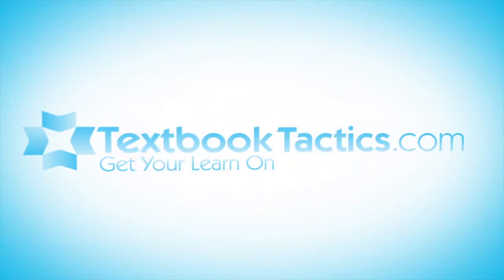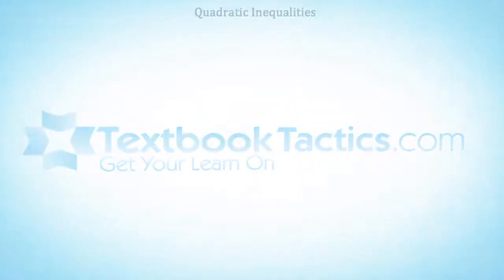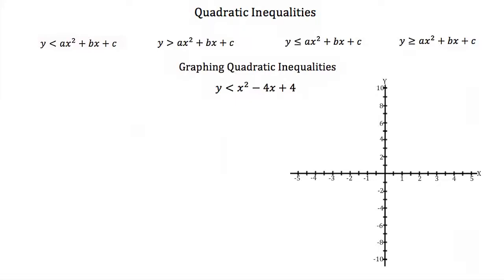This is a tutorial on quadratic inequalities. A quadratic inequality is just like a quadratic equation, except we have an inequality sign — a less than sign, a greater than sign, less than or equal to, or greater than or equal to. These are all quadratic inequalities.